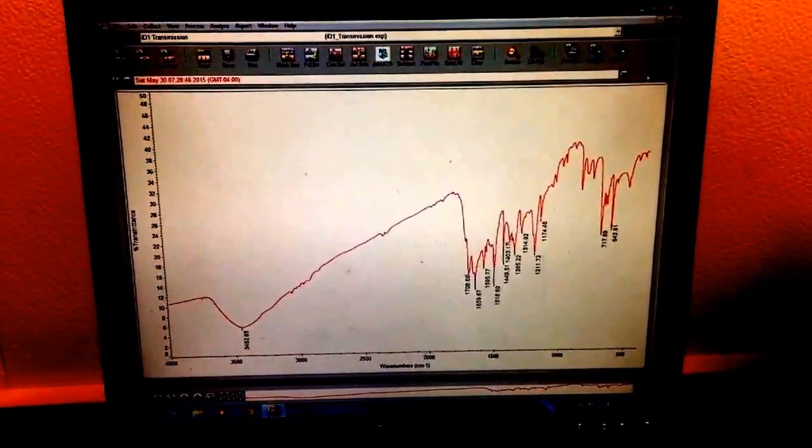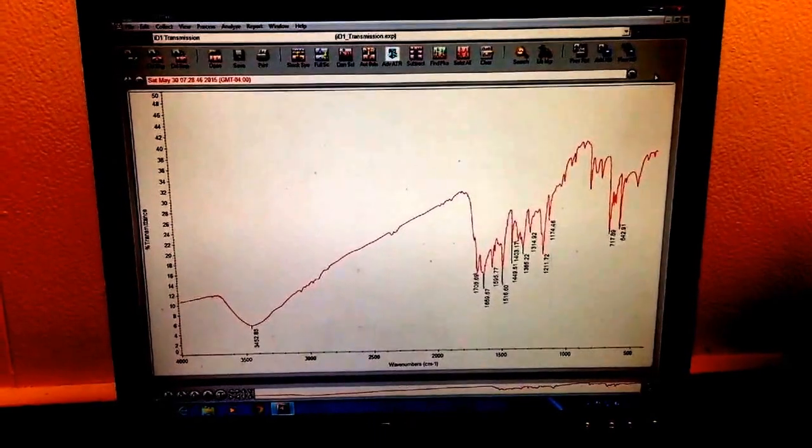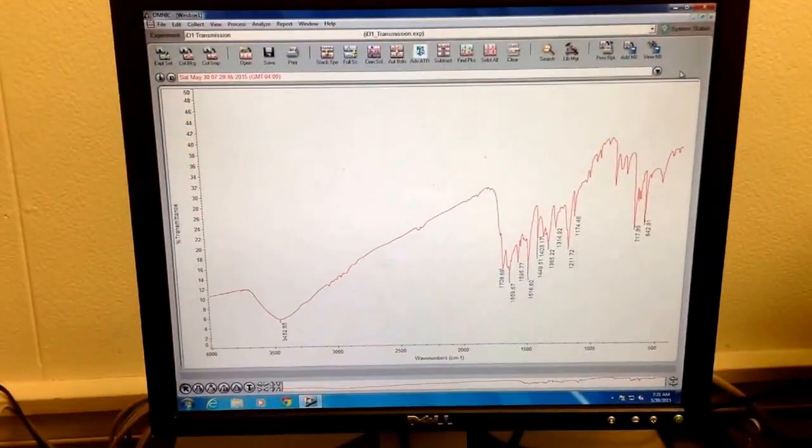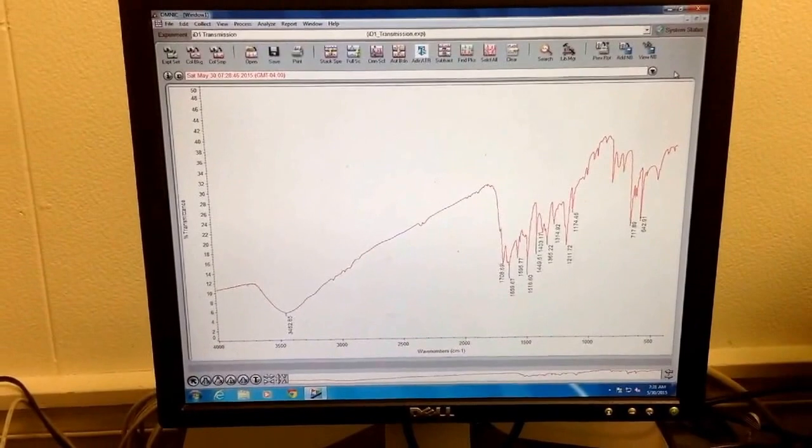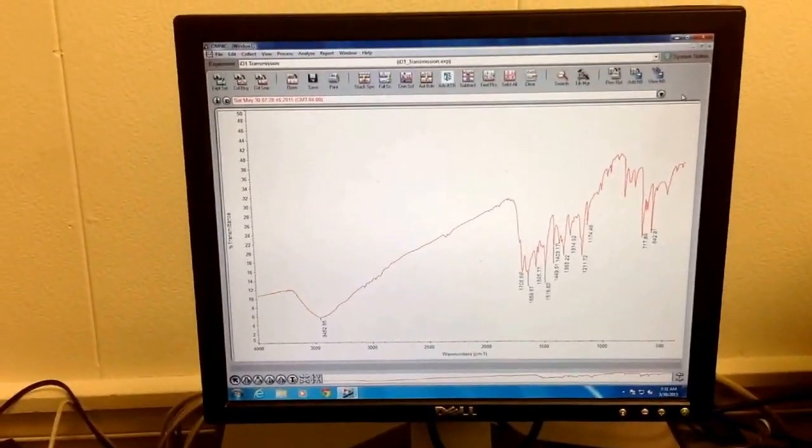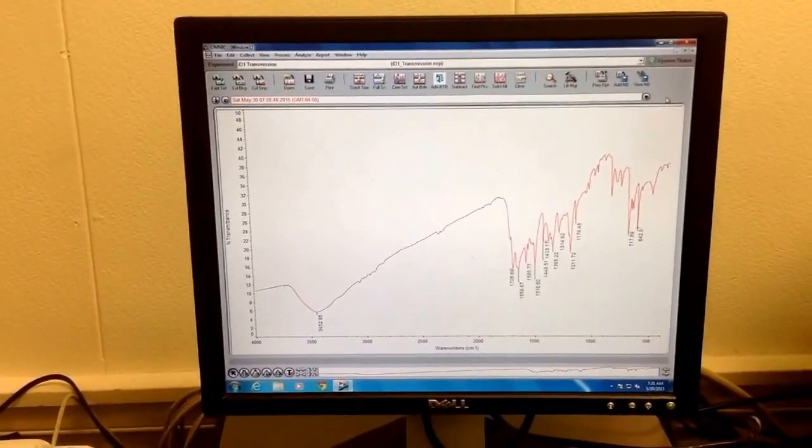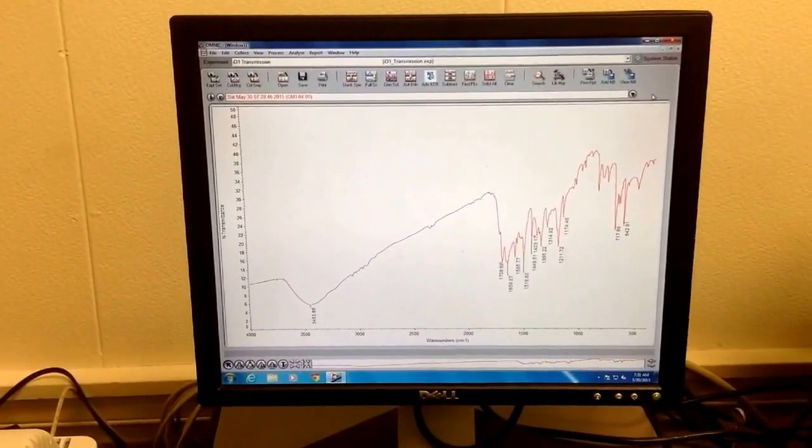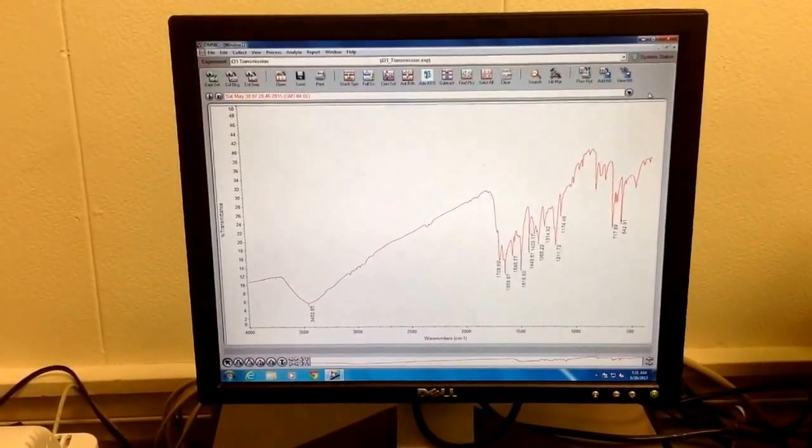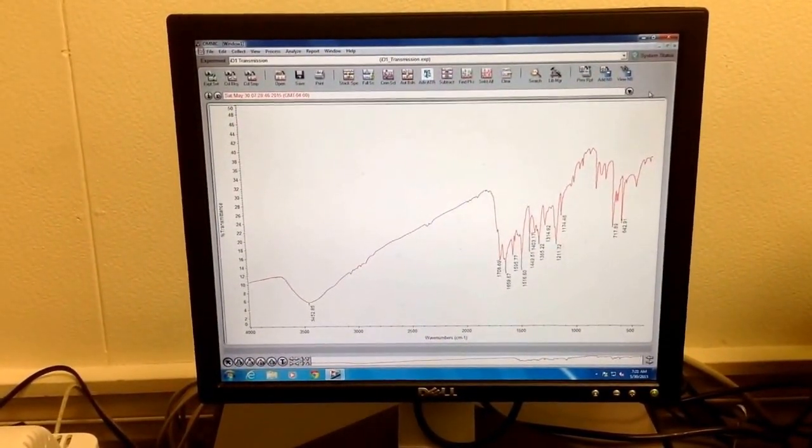And then we can save it with our software. Oftentimes, with software, you can export it to something like Excel, so if you need to include it in a lab report or something. Anyway, this concludes these two videos on collecting transmission IR spectroscopy spectrum. Thank you very much. Have a great day.